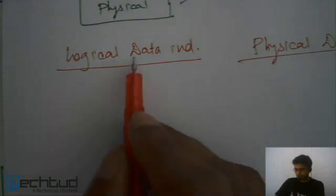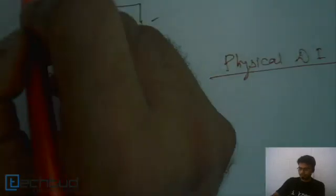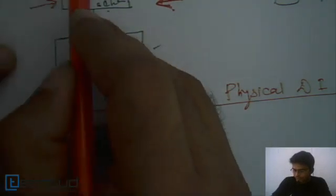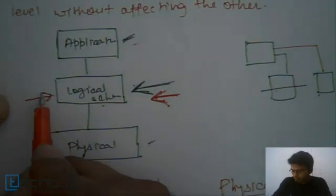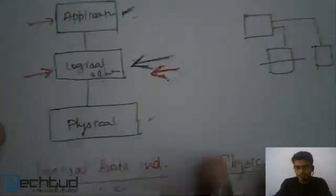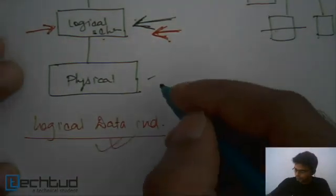Logical data independence works at the conceptual level. If we have to change the logical schema, we need not affect the higher schema level, like the application level. The capacity to change the logical schema without affecting the application program is known as logical data independence.